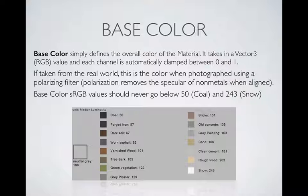Here are some charted values for materials. Coal is kind of the darkest material and pure white snow is the brightest. In between you've got materials like forged iron, dark soil, rough wood, clean cement, sand, and so on.